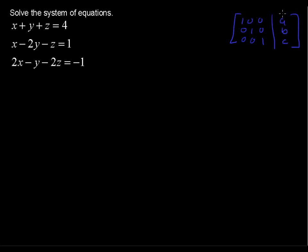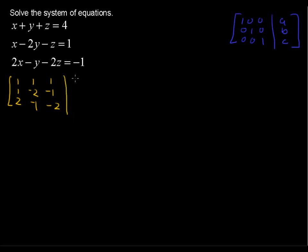So x equals a, y equals b, and z equals c. Let's start by writing the augmented matrix for this system of equations. Going down the columns: 1, 1, 2 for x-coefficients; 1, negative 2, negative 1 for y-coefficients; and 1, negative 1, negative 2 for the z-coefficients. For the constants we have 4, 1, and negative 1.